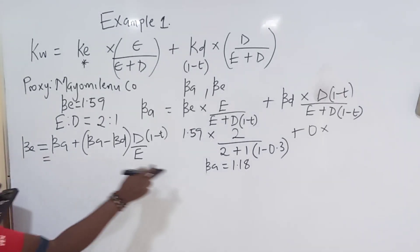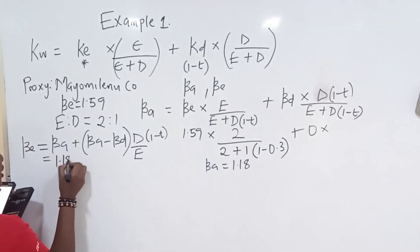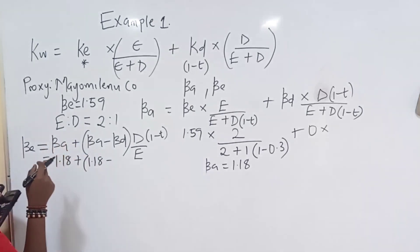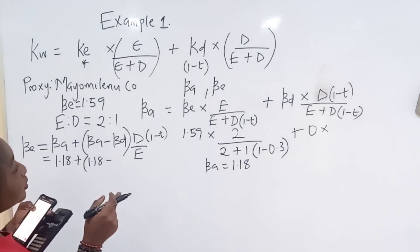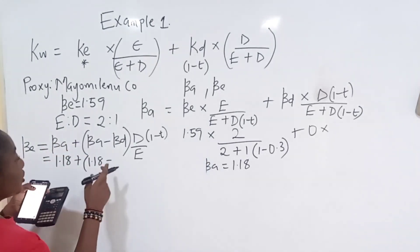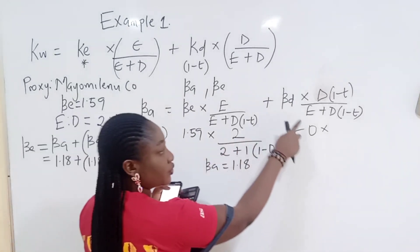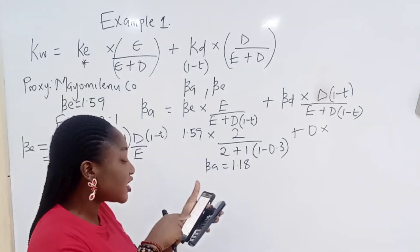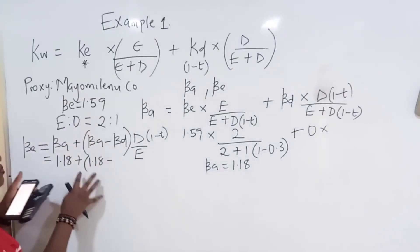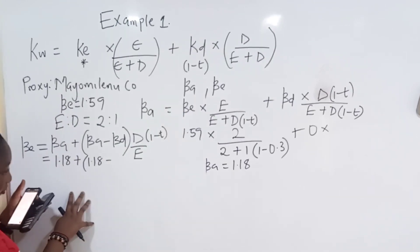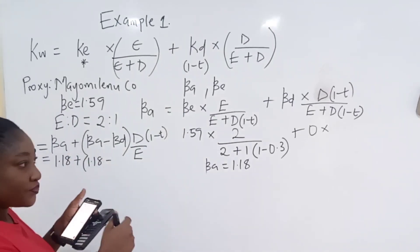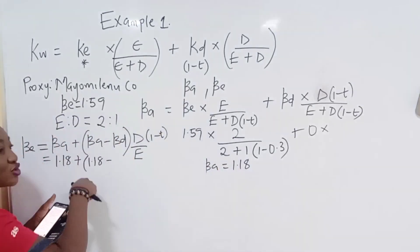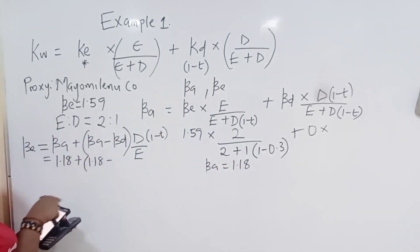So what is BA? What you just got? 1.18. Plus 1.18 minus, where is BD? Where is BD? You look for your BD. Now this BD is not this one. This was proxy's information. Try and check the question. Did they give you a BD? A risk of debt for Bargain Very Poor? Because they are using Bargain Very Poor information to regear.